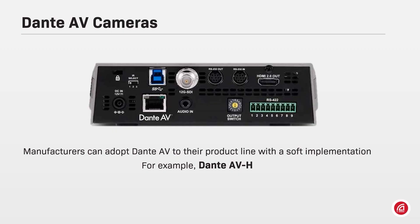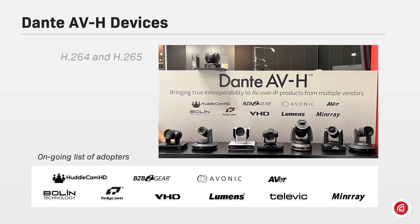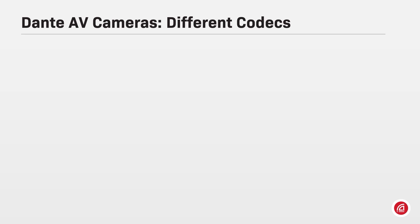For example, Dante AVH is a solution inside the Dante AV family that allows devices that already encode video using H.264 or H.265 to integrate the Dante network and benefit from interoperability with thousands of devices.